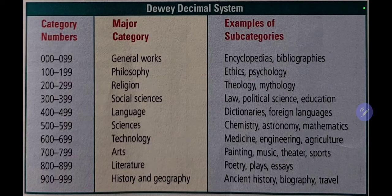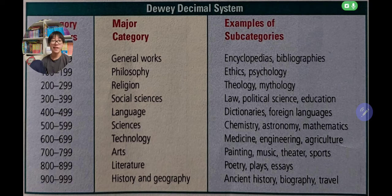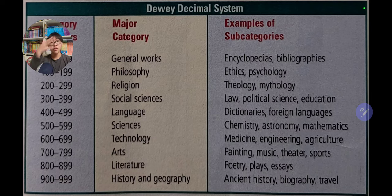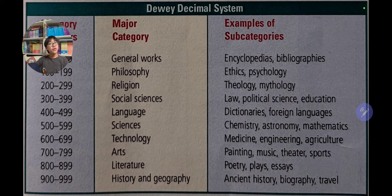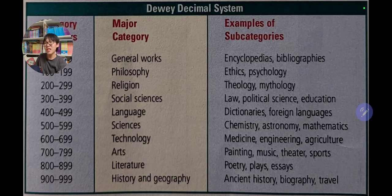Zero to 99 are the general works, which include encyclopedias and bibliographies. From 100 to 199 is basically philosophy, with subcategories such as ethics and psychology. For numbers between 200 to 299, it's about religion, which includes theology, mythology, and legends.